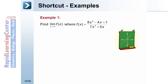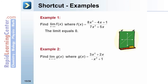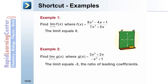Example 1: Find the limit as x approaches infinity of (8x² − 4x + 1)/(7x³ + 5x). The numerator degree is less than the denominator degree, so the limit is 0. Example 2: Find the limit as x approaches negative infinity of g(x) = (3x² + 2x)/(−x² + 1). The numerator degree equals the denominator degree — both are 2 — so the limit is the ratio of leading coefficients: 3 divided by −1 equals −3.